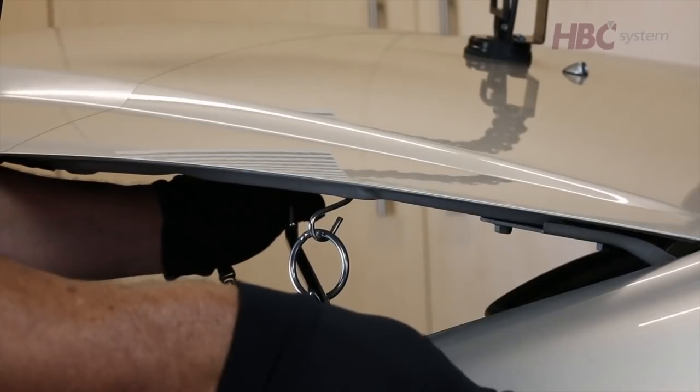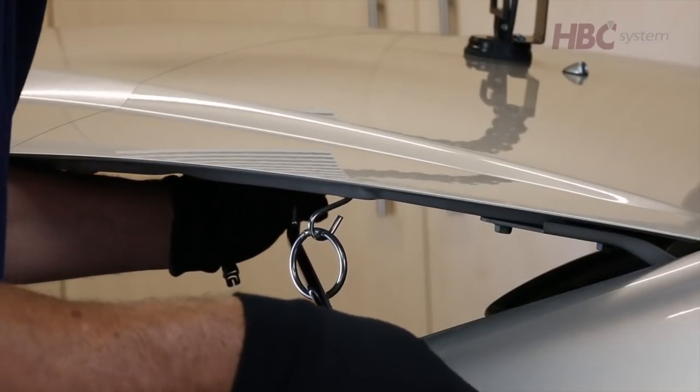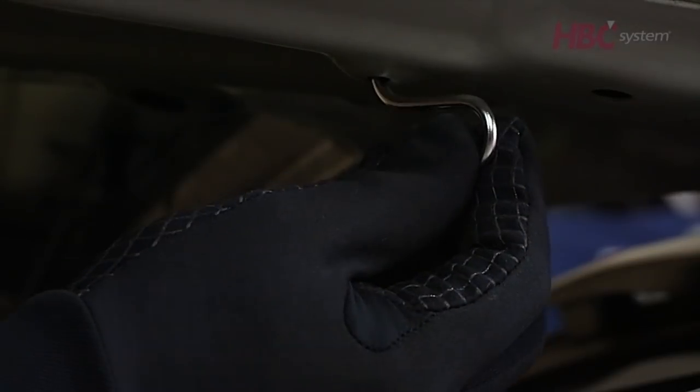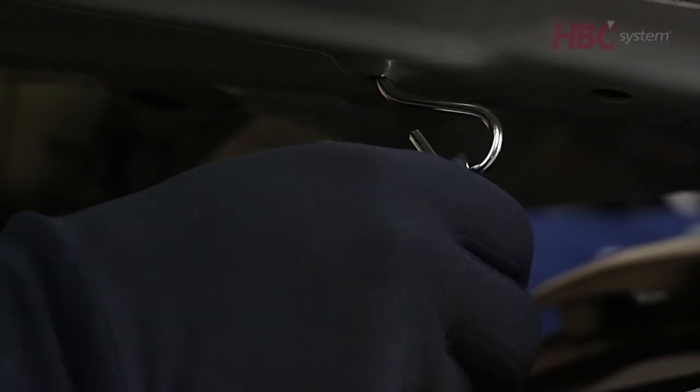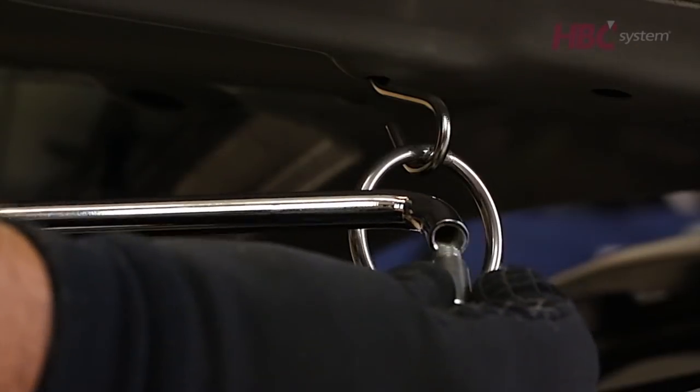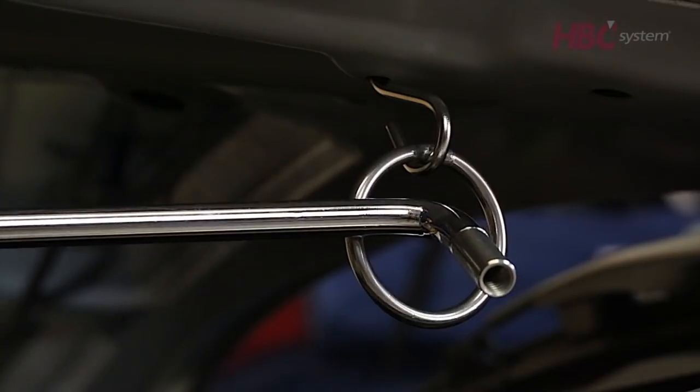In wide open panel areas such as a hood, place the S-hook in an open hole and attach the ring. Using one of your supplied PDR rods you can add an extension and place inside the ring to use as leverage.